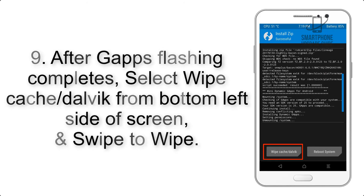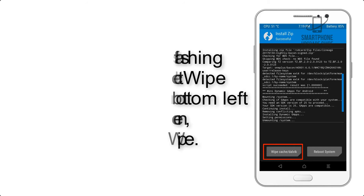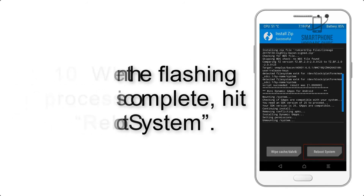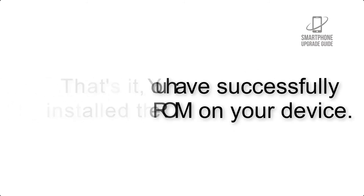Step 9: After GApps flashing completes, select Wipe Cache and Dalvik from the bottom left side of the screen and swipe to wipe. Step 10: When the flashing process is complete, hit Reboot System. That's it — you have successfully installed the ROM on your device.